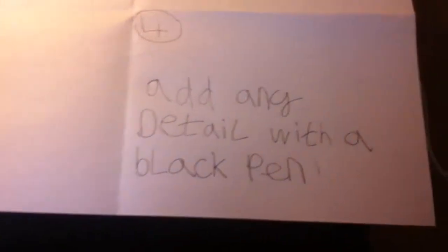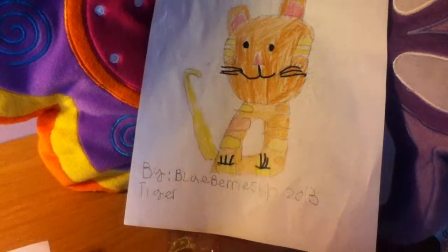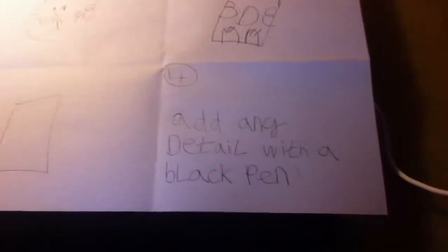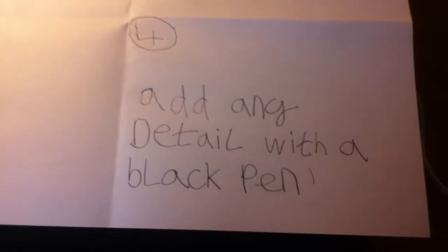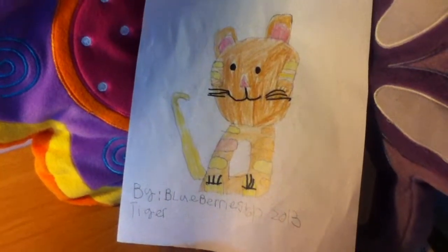Okay, so step four is basically adding any detail you want, such as the eyes, the mouth, the whiskers, and like the claws on the tiger. So thanks for watching and subscribe to my channel, and hope to see more videos soon.